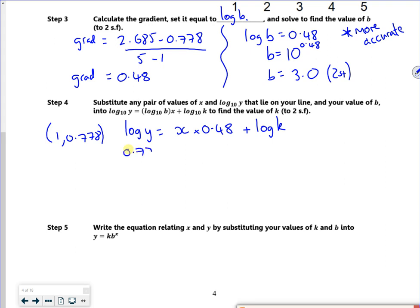So I'm putting the 0.778. I've got 1 times 0.48 plus log k. So if I do the rearrange, that gives me, according to the completed part, gives me that value.